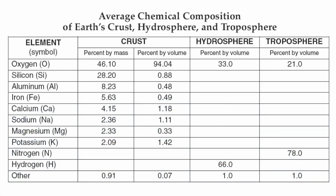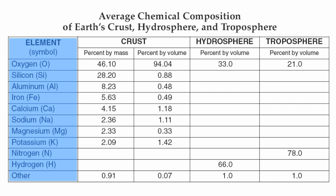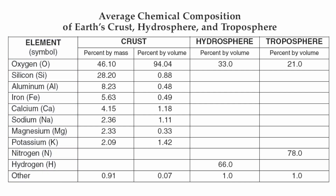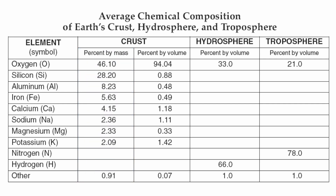This is a relatively easy chart to read because everything is in nice neat columns and rows. Let's talk about the titles in your chart. First we're going to start with the elements — each one of those elements is found somewhere within the Earth. The next section over is going to be your crust. These percentages are either going to be by mass or by volume.